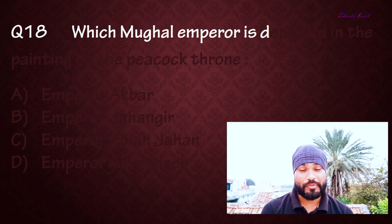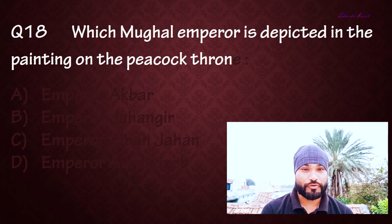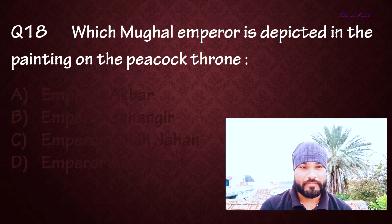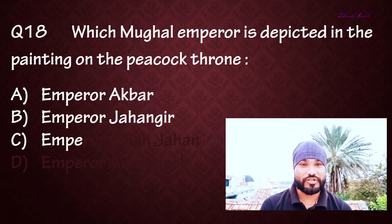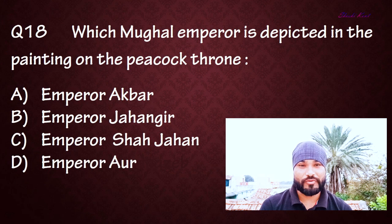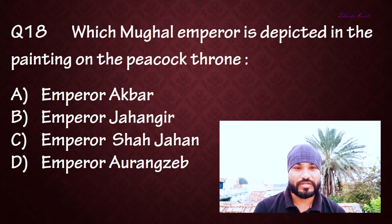Question number eighteen: Which Mughal emperor is depicted in the painting on the Peacock Throne? Option A: Emperor Akbar, Option B: Emperor Jahangir, Option C: Emperor Shah Jahan, Option D: Emperor Aurangzeb. The correct answer is Option C: Emperor Shah Jahan.